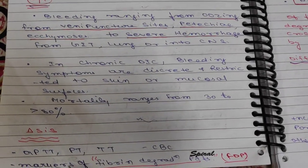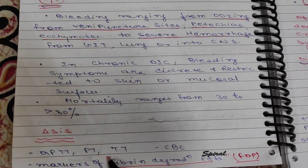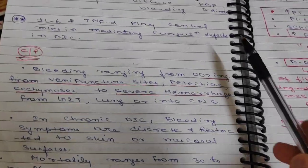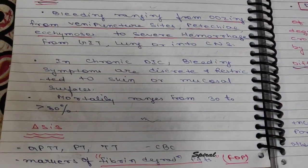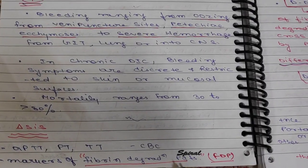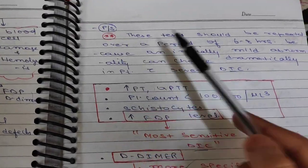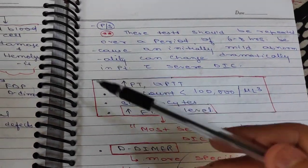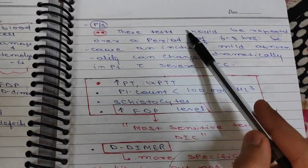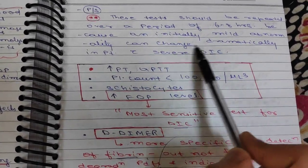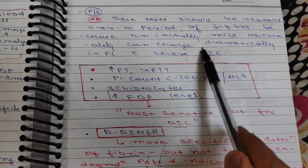For diagnosis, you will perform CBC, aPTT, PT, and markers of fibrin degradation products (FDP). You can also observe the peripheral smear. These tests should be repeated over a period of 6 to 8 hours because an initially mild abnormality can change dramatically into a severe form.